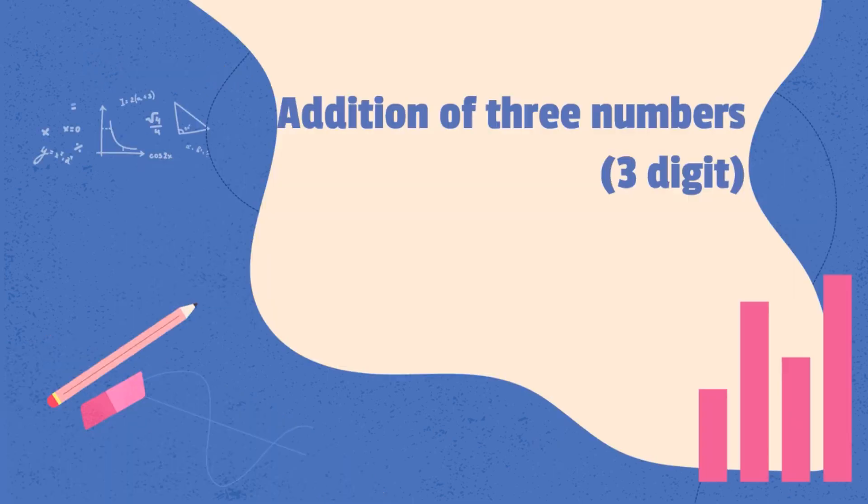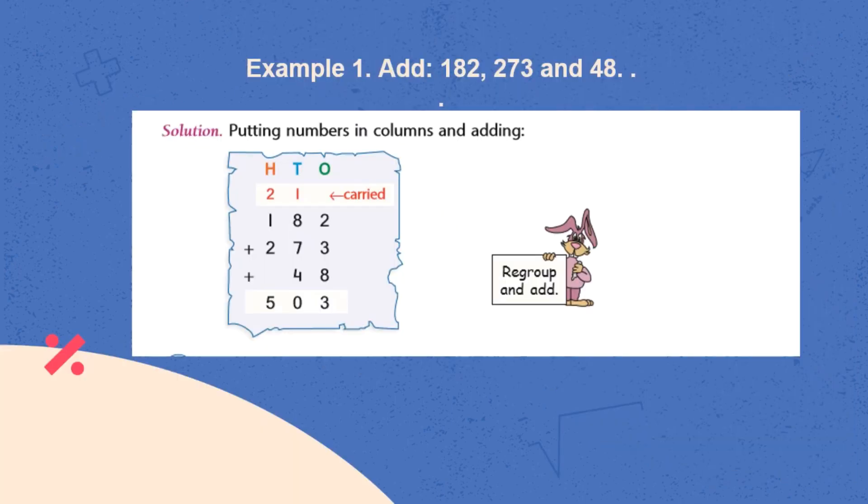Our next topic is addition of 3 digit numbers. In the mentioned example, we can see numbers 182, 273 and 48 are added. Here, numbers are added by putting numbers in column. The result of addition is 503.